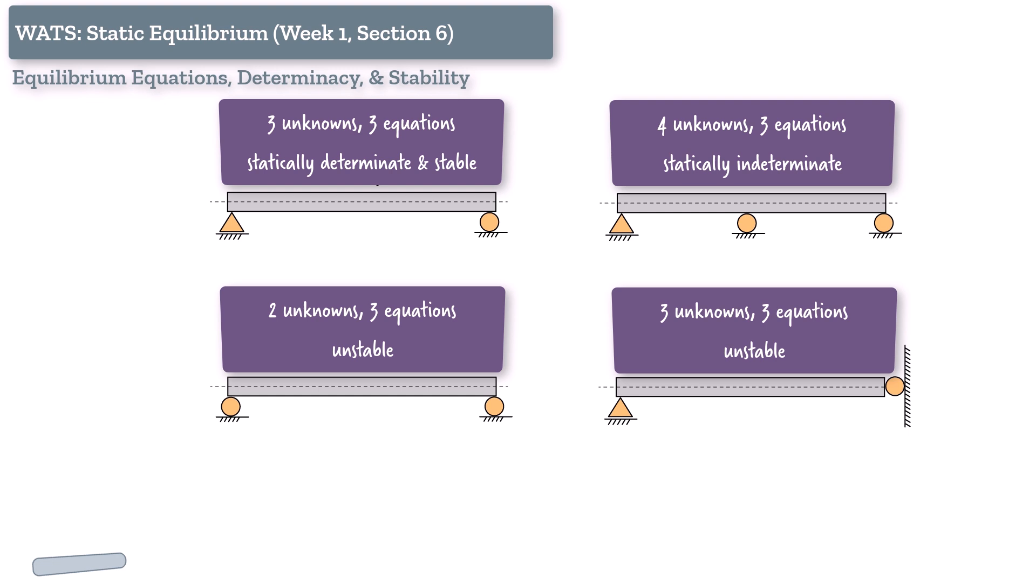So what's the big picture? Counting equations and unknowns is a great first check. It tells you whether a solution might be possible. But don't stop there. Always ask. Can the structure resist all possible loads? Do the equations actually have a consistent, solvable solution? Does the support configuration ensure both determinacy and stability?